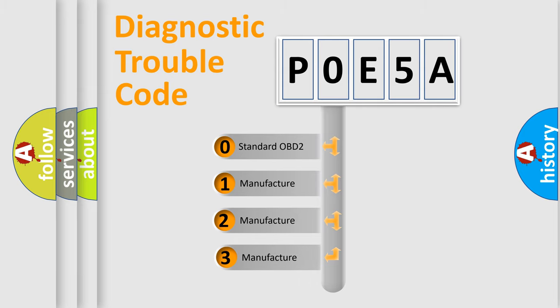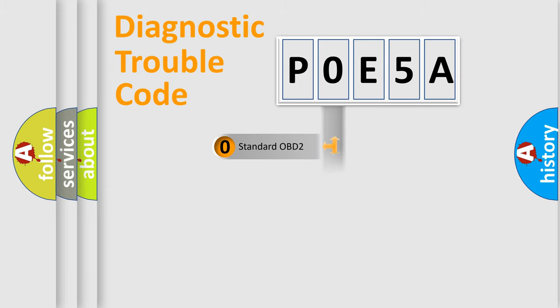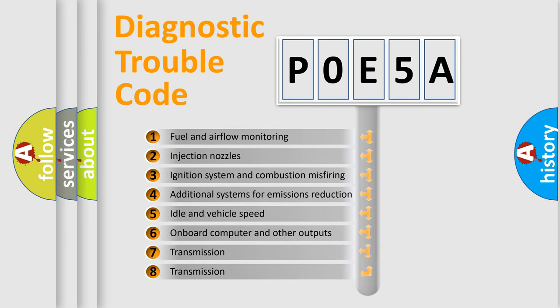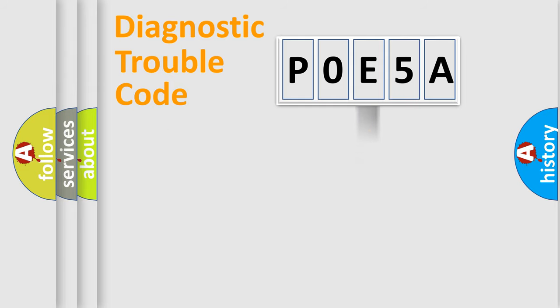If the second character is expressed as zero, it is a standardized error. In the case of numbers 1, 2, or 3, it is a more specific expression of the car-specific error. The third character specifies a subset of errors. The distribution shown is valid only for the standardized DTC code.